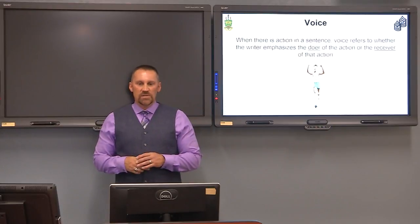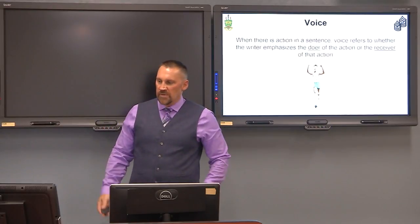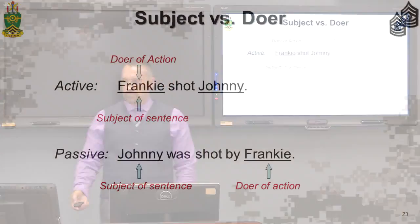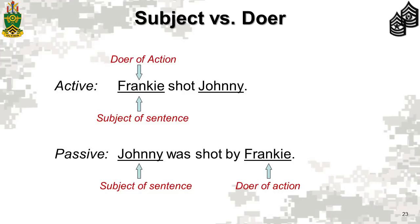Let's talk about the subject versus the doer of the action. Take this simple sentence: 'Frankie shot Johnny.' Frankie is obviously the one doing the shooting — there is action in the sentence because somebody was shot. Frankie is the one doing the shooting, and Frankie is the subject of the sentence. That is active voice.